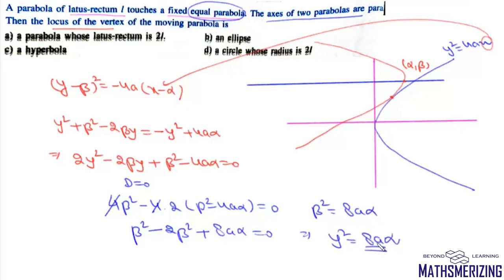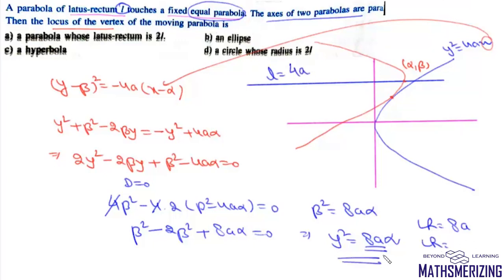The latus rectum of this locus parabola y² = 8ax is 8a. The latus rectum of the given fixed parabola is 4a, which equals L. So 8a = 2L. Therefore, the locus of the vertex of the moving parabola is a parabola whose latus rectum is 2L.